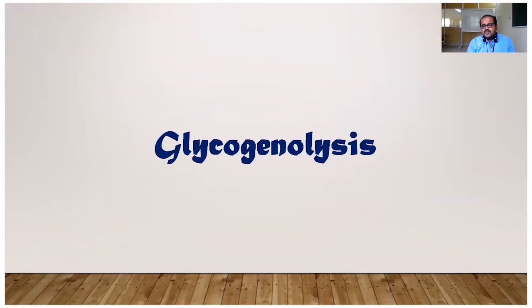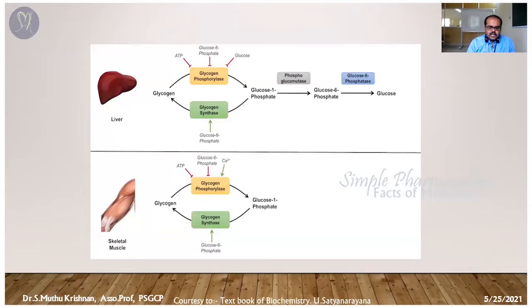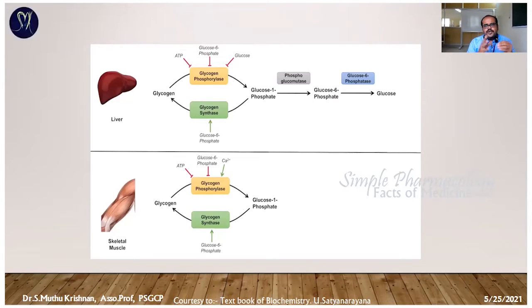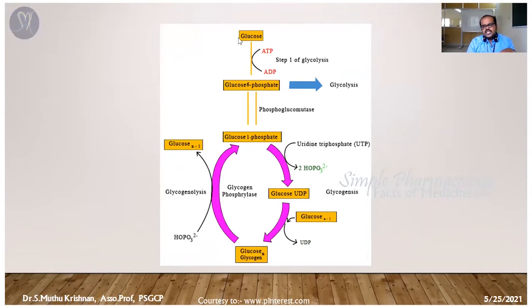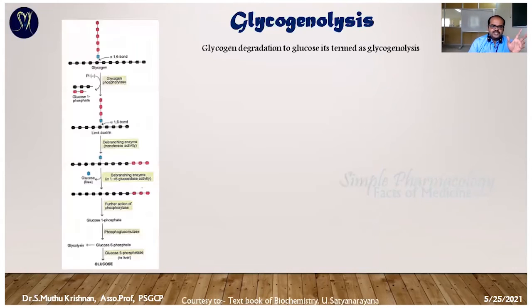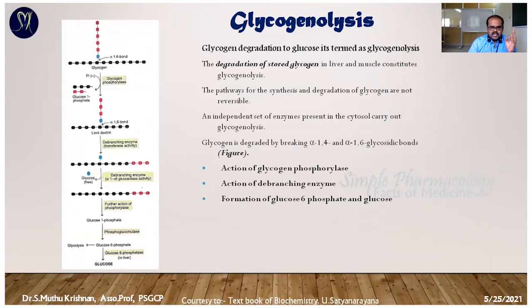Glycogenolysis is the degradation of glycogen into glucose. When the body needs glucose — for example when no food is available — stored glycogen breaks down into free glucose for basal metabolic purposes. Glucose-1,6-phosphate is first produced, then converted to glucose-6-phosphate, and finally to free glucose. The overall steps are divided into three: first, action of glycogen phosphorylase enzyme; second, debranching; third, conversion of glucose-6-phosphate to glucose.